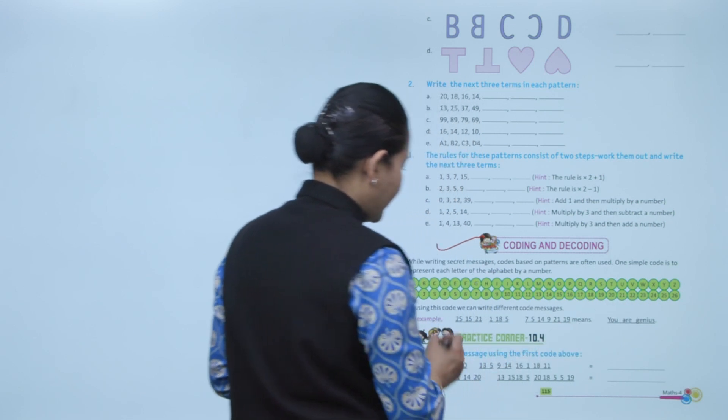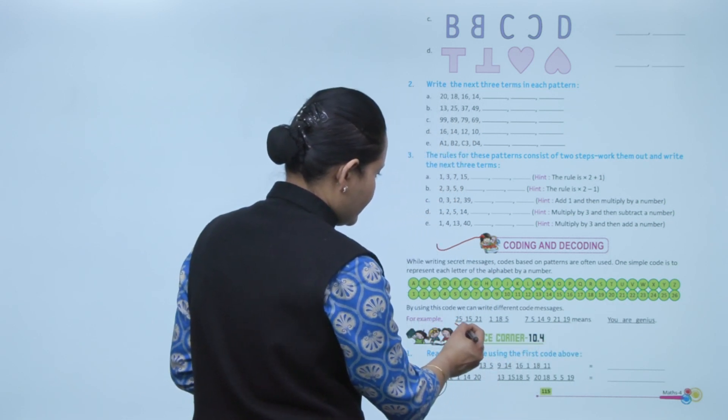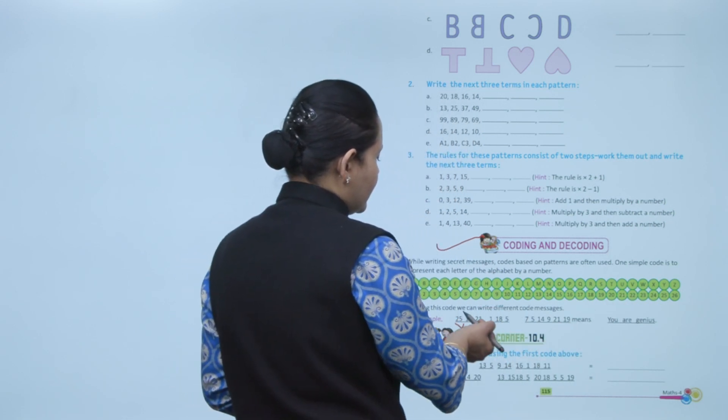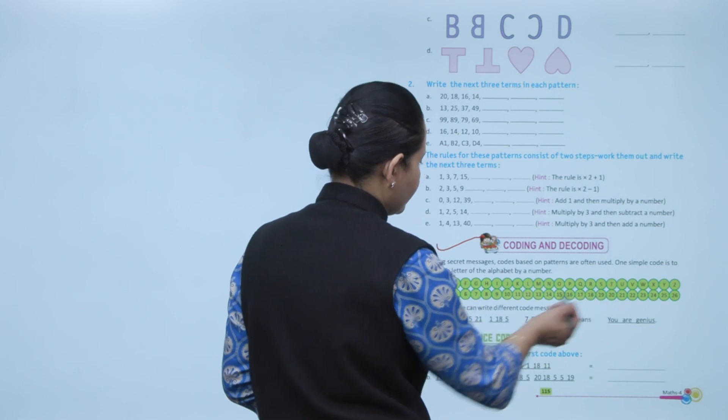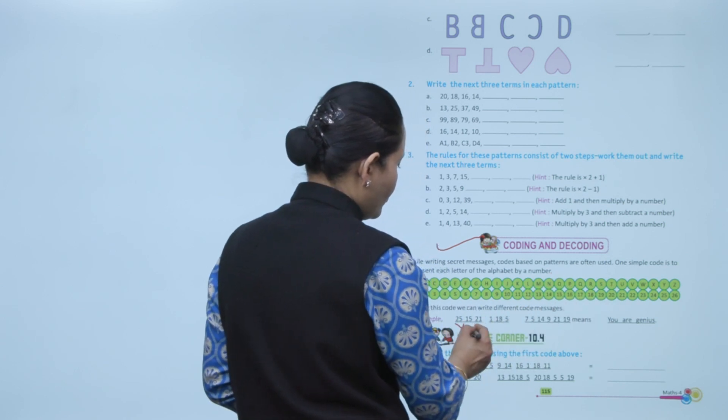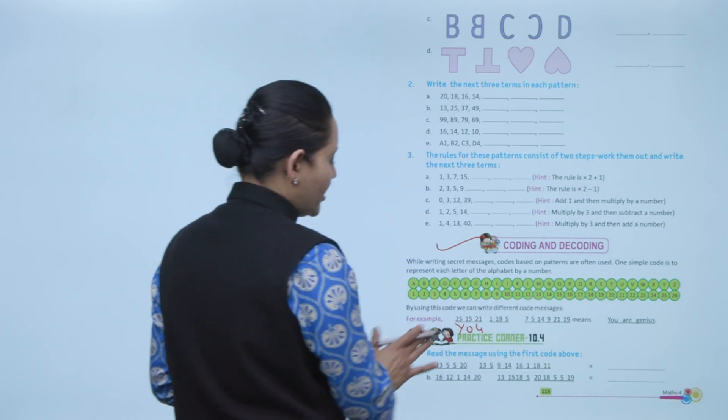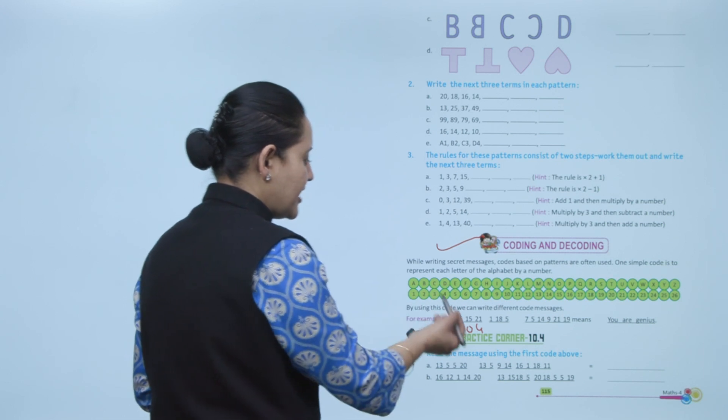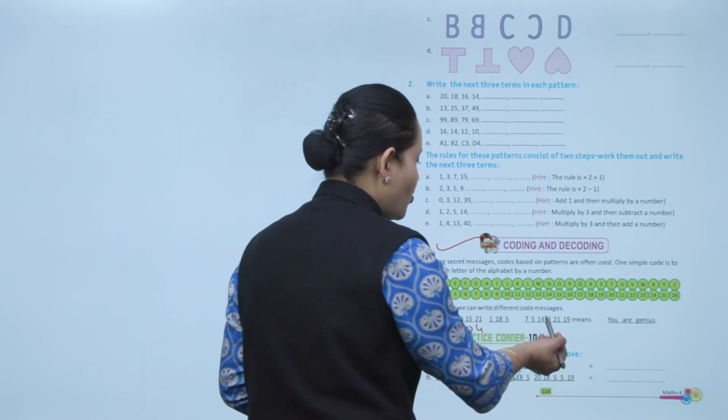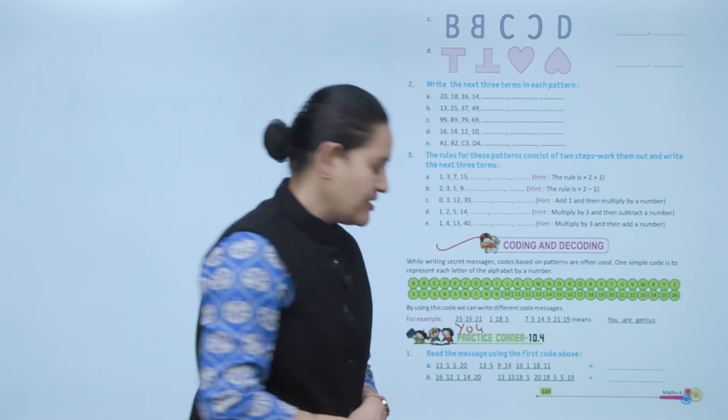Here we have written 25, 15, 21, 25 - that represents letter Y, O, U. Like this we can decode the message and the message is 'you are genius.'